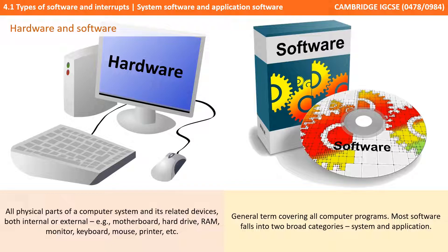Hardware is all the physical parts of a computer system and its related devices, both internal or external. We're talking things like motherboards, hard drives and RAM, as well as things like monitors, keyboard, mice and printers.